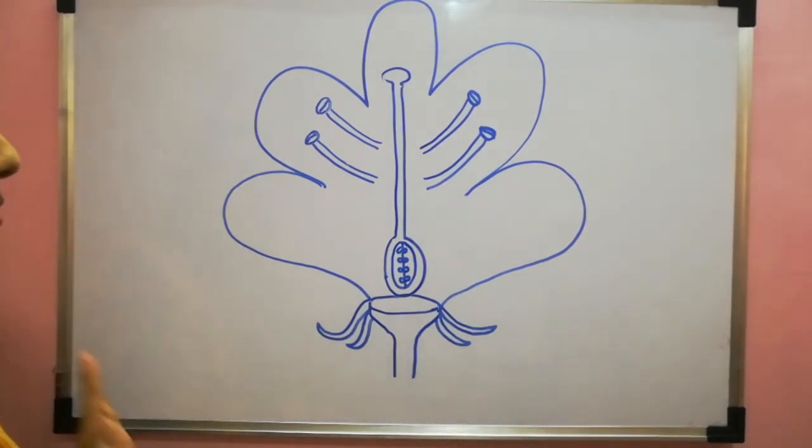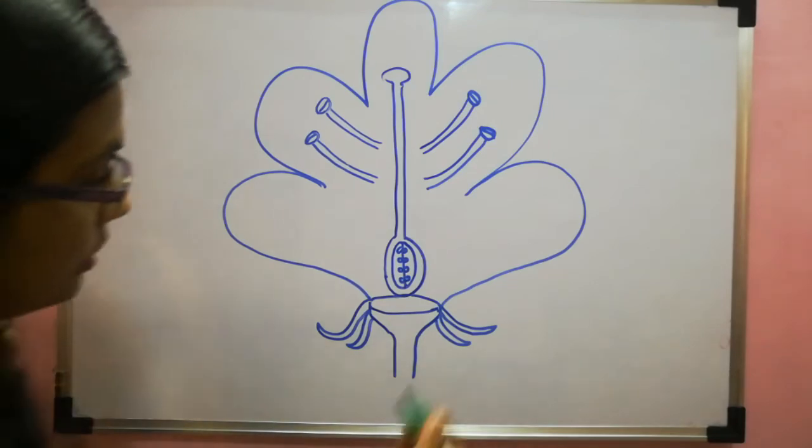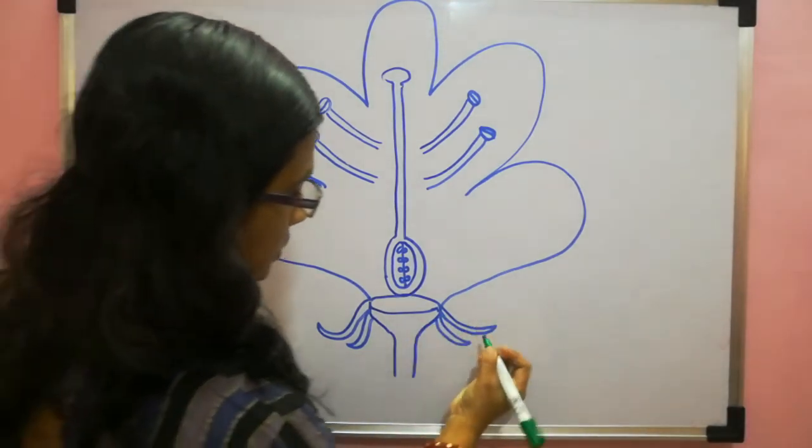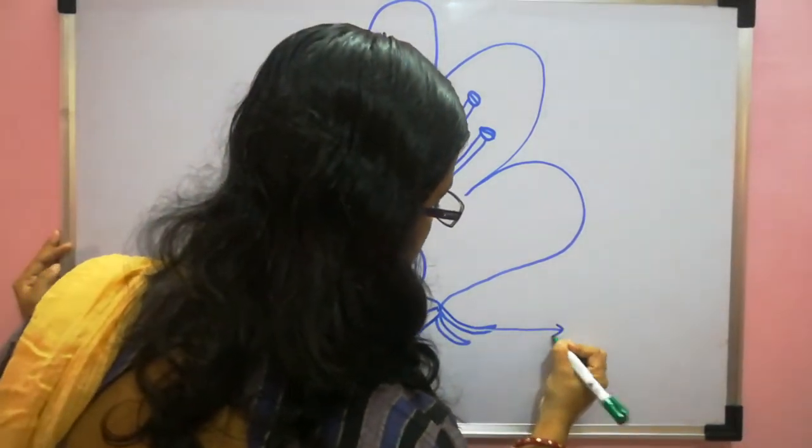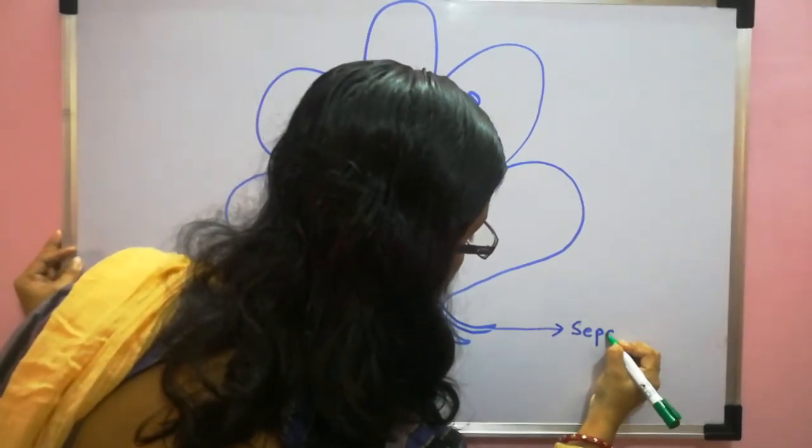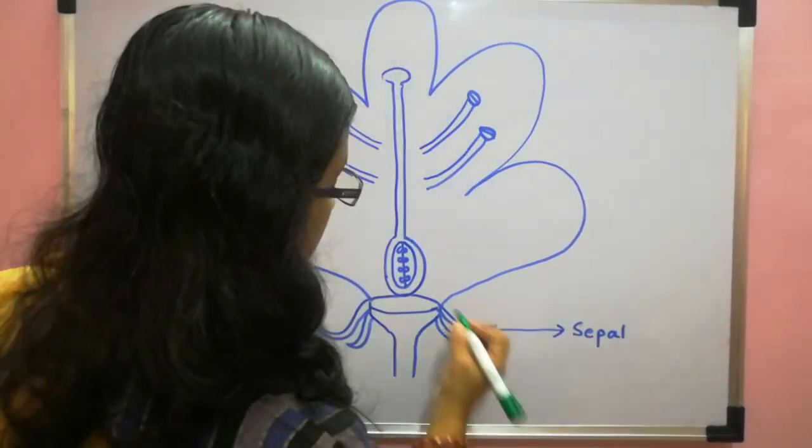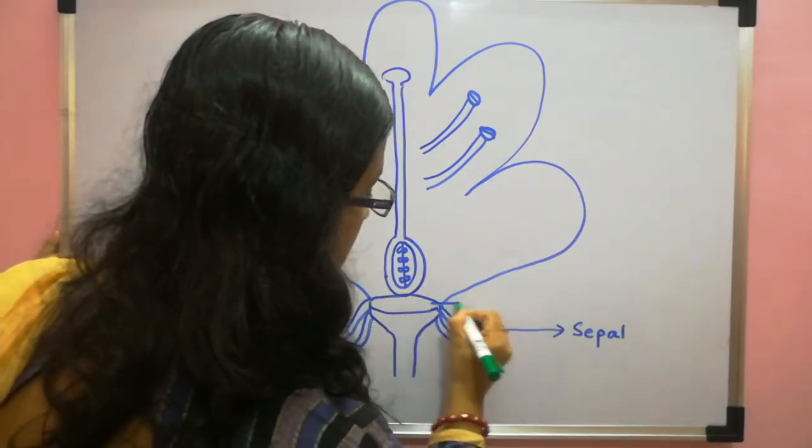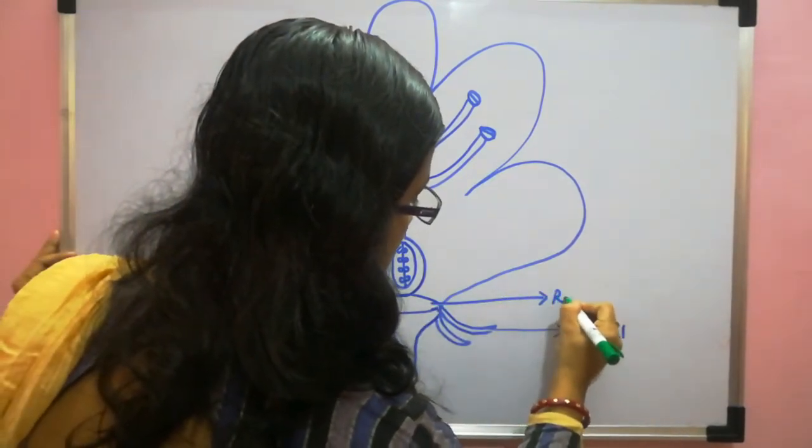So now left is label pattern. So we will start from here, from down. So this green leafy structure is sepal. This part. The base part is known as receptacle.